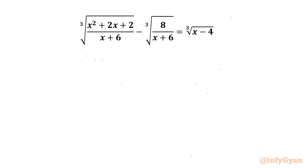Welcome back to Infigyan friends. In today's video we have another very interesting question from radical equations. It is: cube root of (x² + 2x + 2) over (x + 6) minus cube root of 8 over (x + 6) equal to cube root of (x − 4). So let's get started.